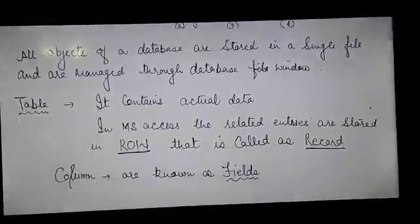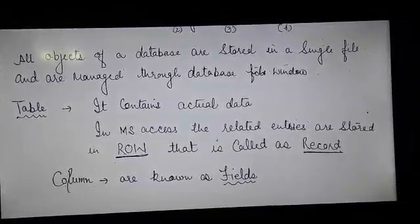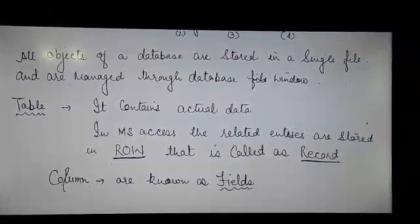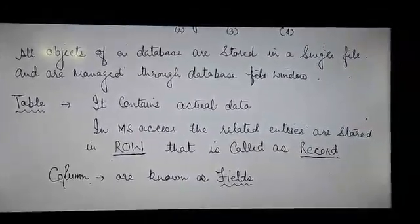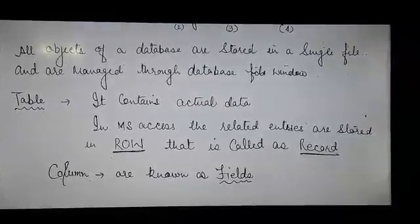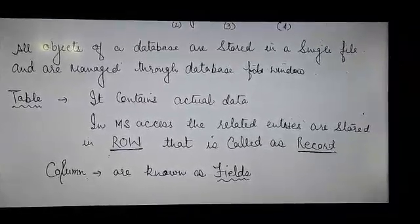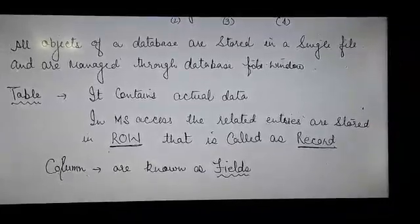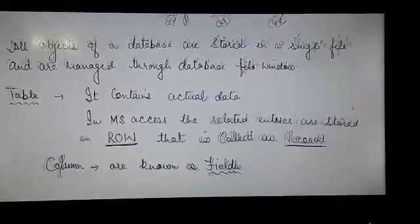The first one is table. It contains the actual data. In MS Access, the related entries are stored in rows and they are known as records, and columns are known as fields.